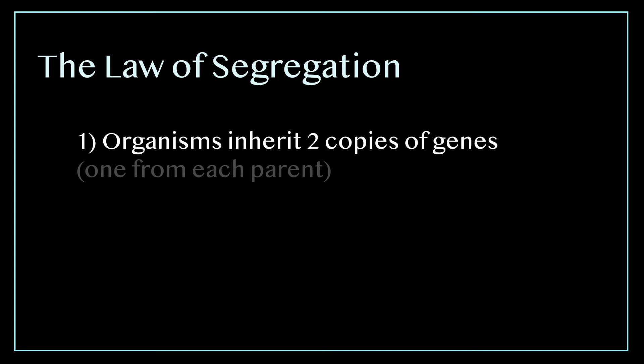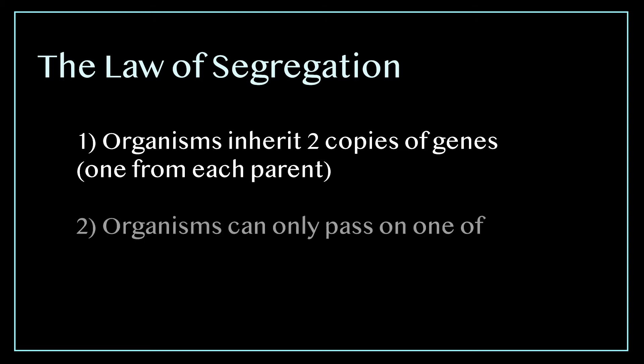Okay the last term we need to know for simple Mendelian genetics is the law of segregation. The law of segregation is a scientific law stating that one, organisms inherit two copies of genes, one from each parent. And two, organisms can only pass one of their two genes to their children.